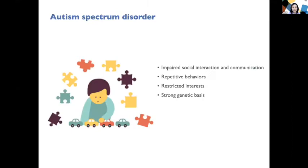What is autism? Autism spectrum disorder is a developmental disorder, often characterized by impaired social interaction and communication, repetitive behaviors, and restricted interests. It has been shown to have a strong genetic basis, which means you can inherit autism risk genes from parents — it runs in the family.